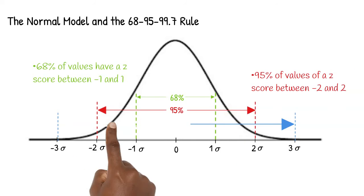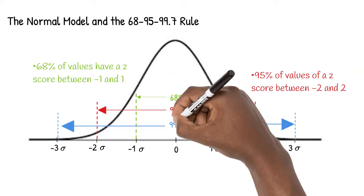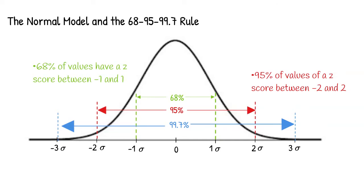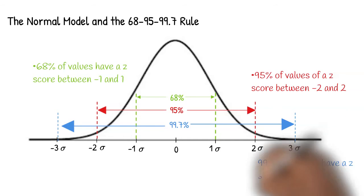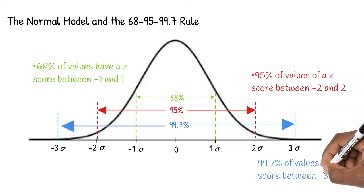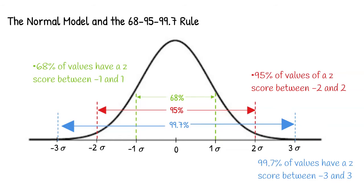99.7% of the values are within three standard deviations of the mean. In other words, 99.7% of the values have a z-score between negative three and three.